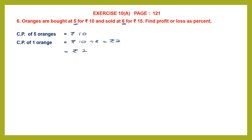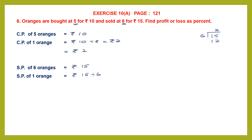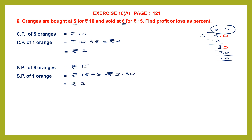Now the selling price of 6 oranges is given to us, that is 15 rupees. We need to find the selling price of 1 orange. That will be 15 rupees divided by 6. 6 twos are 12, remainder 3. Put a decimal point, bring 0 down to get 30. 6 fives are 30, remainder 0. So the quotient is 2.5, that is 2 rupees and 50 paise. The selling price of 1 orange is 2 rupees 50 paise.